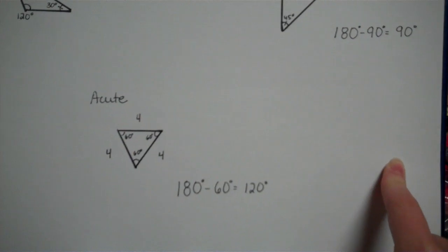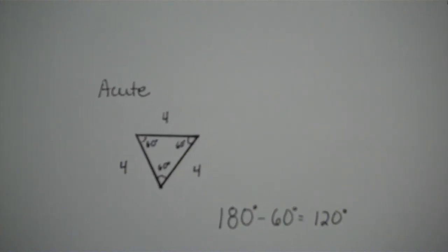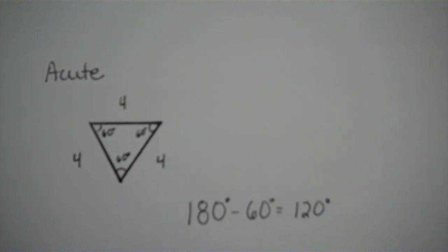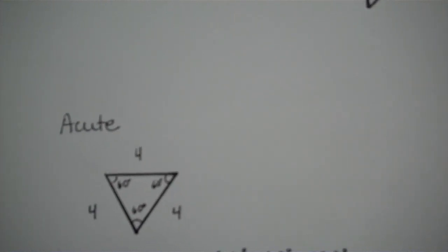Because of this rule, you can only have an acute equilateral triangle. All of the angles have to be the same in order for the sides to be the same length.